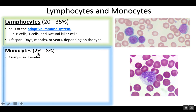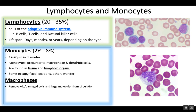Monocytes make up about 2% to 8% of the circulating white blood cells, and they happen to be the largest, getting up to 20 microns or micrometers in diameter. The monocytes develop into macrophages and dendritic cells, so they are a type of precursor cell. They're circulating in the bloodstream, and then they might enter a tissue and become a macrophage, which can phagocytose microbes and debris, or a dendritic cell.